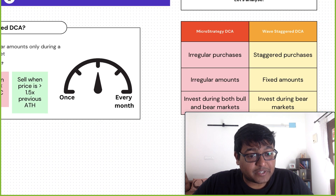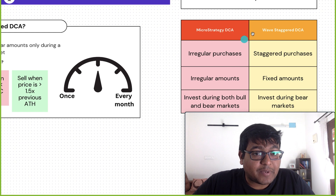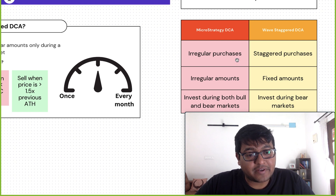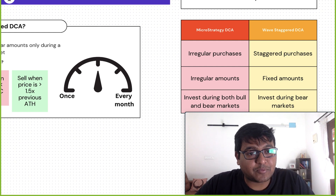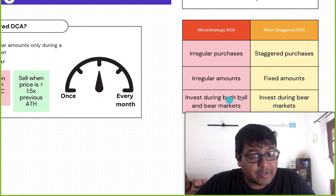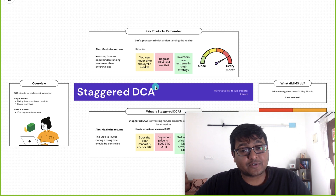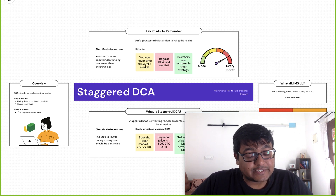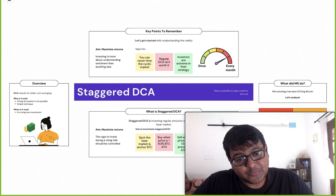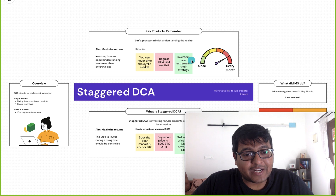This requires enormous discipline. To compare MicroStrategy's DCA versus staggered DCA: they make irregular purchases and just keep buying; here it's staggered with a rule — only buy when below 50% of ATH. They invest irregular amounts; here it's fixed amounts. They invest during both bull and bear markets; here investing is only during a bear market. That's how you can really maximize your returns — and this concept is what I call staggered DCA. Let me know your thoughts in the comments. If you like this video, like and subscribe to the channel, tell your friends about it, and welcome to the Wave Crypto Club.